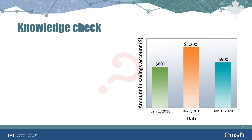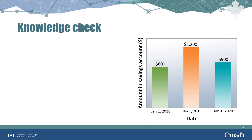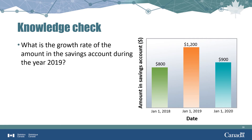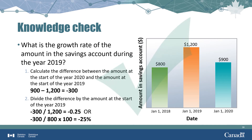What was the growth rate of the savings account during 2019? The answer is negative 0.25, or negative 25%. We took the amount at the start of 2020 ($900) and subtracted the amount at the start of 2019 ($1,200), giving negative $300. Dividing by the 2019 starting amount of $1,200 gives a growth rate of -0.25, or -25%. The negative rate means the account decreased — one quarter of its initial value was lost during 2019.